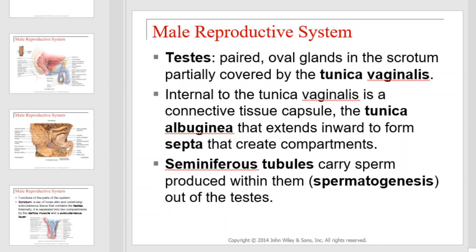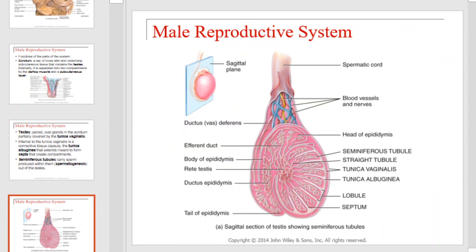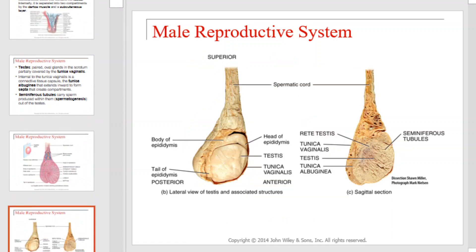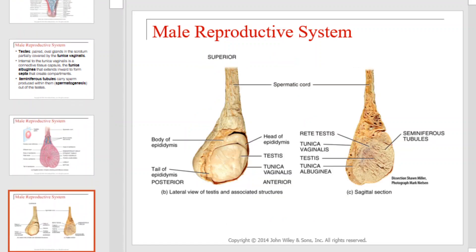Internal to the tunica vaginalis is a connective tissue capsule, the tunica albuginea, that extends inward to form septa that create compartments. Seminiferous tubules carry sperm produced within them through a process known as spermatogenesis. This is a cross-section of the testis, and this is the same structure in a cadaver dissection.